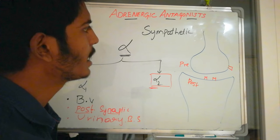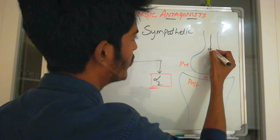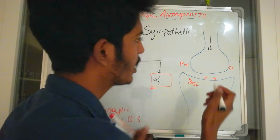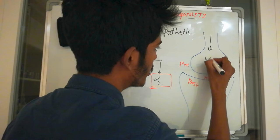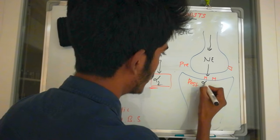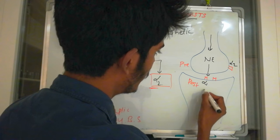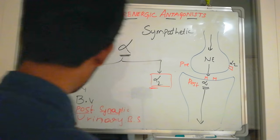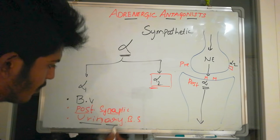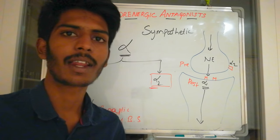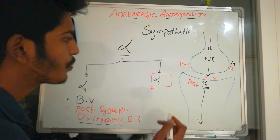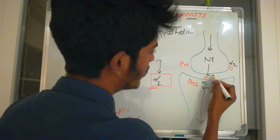When an action potential arrives, it stimulates calcium channels, causing neurotransmitter release — that is, norepinephrine is released. Norepinephrine binds with the alpha 1 adrenoreceptor. When alpha 1 is stimulated, it produces vasoconstriction, and in the urinary bladder it constricts the sphincter, making urination difficult.